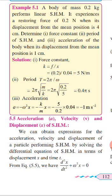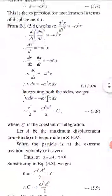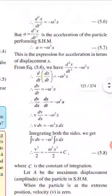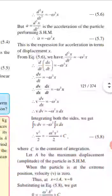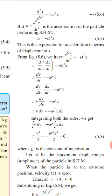Now let's derive expressions for acceleration, velocity, and displacement in simple harmonic motion. From the differential equation for linear SHM — d²X/dt² plus ω²X equals 0 — we know that d²X/dt² equals minus ω²X. Since acceleration A equals d²X/dt², the expression for acceleration is simply A equals minus ω²X. So acceleration in terms of displacement is straightforward to derive.